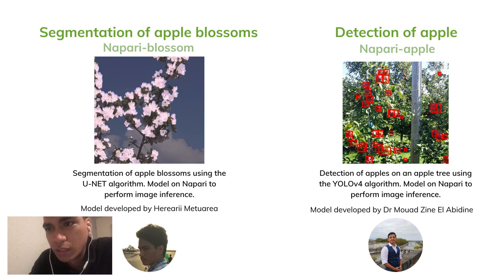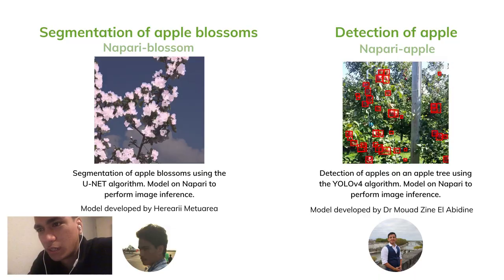In this video, I'm going to present two use cases in Napari in the form of a plugin. These use cases are segmentation of Apple Blossom and Apple detection. The iMorphin team has developed two deep learning models. Apple Blossom segmentation is the application of the UNet algorithm, and Apple detection is the application of the YOLOv4 algorithm. These models have been integrated into Napari as a plugin to perform image inference, now available to the scientific community. I will teach you how to get them and how to use them.